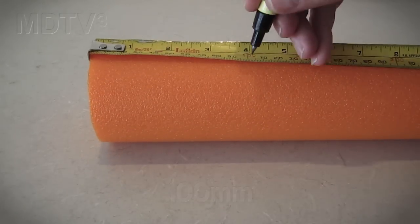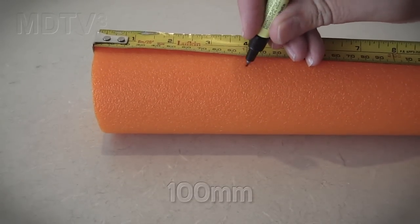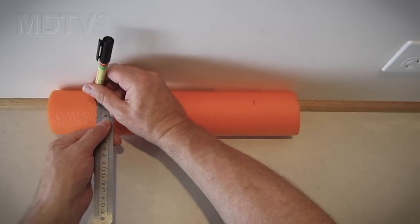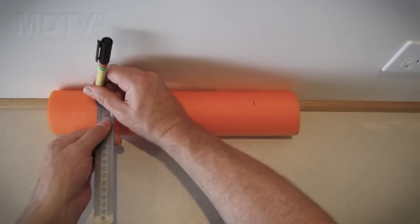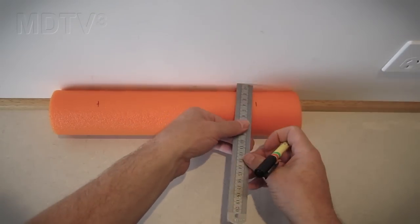Mark out the position of the holes 100 millimeters in from each end on all sections. To make sure the holes are in the same line, you can place the sections against a wall and measure out the same distance from the wall.